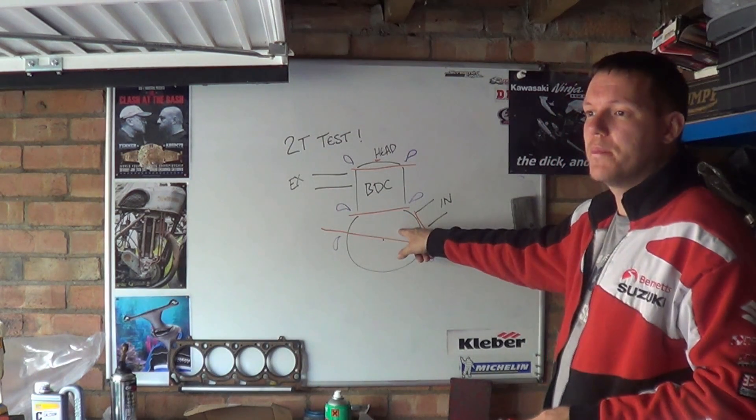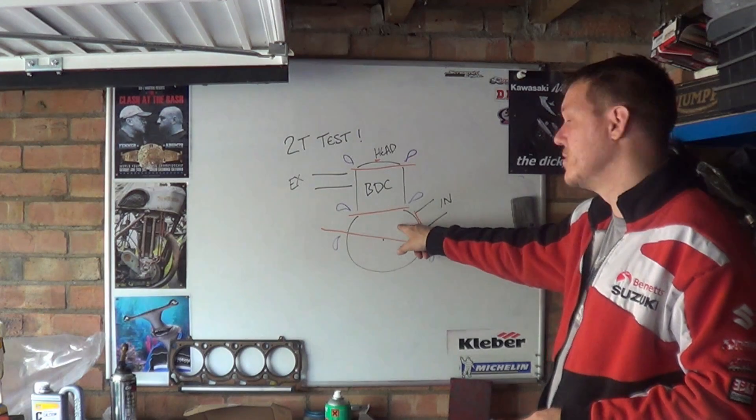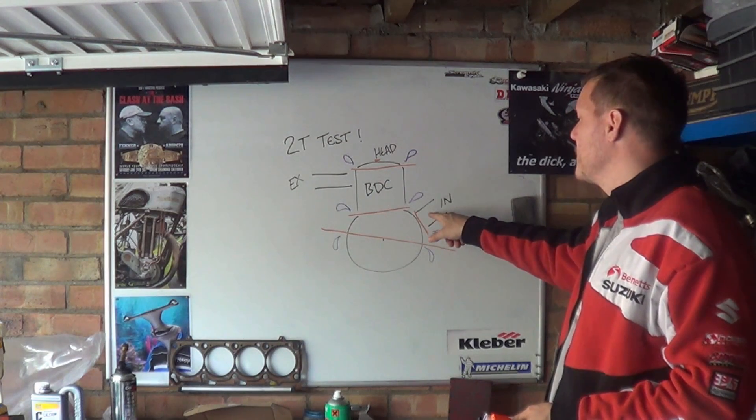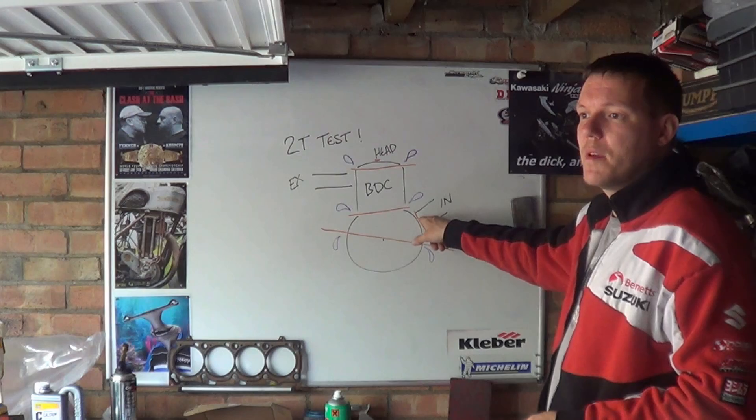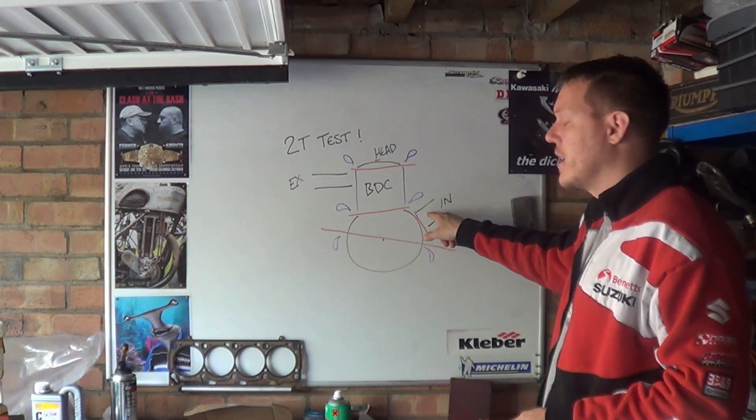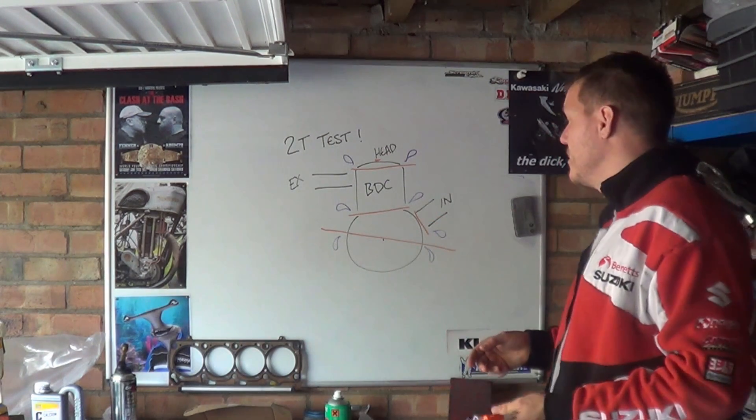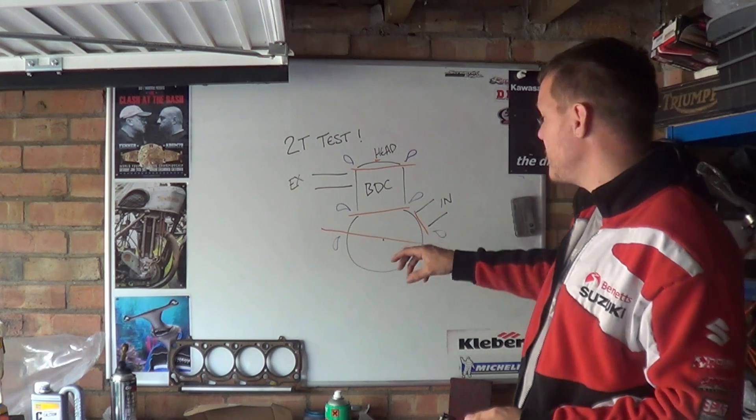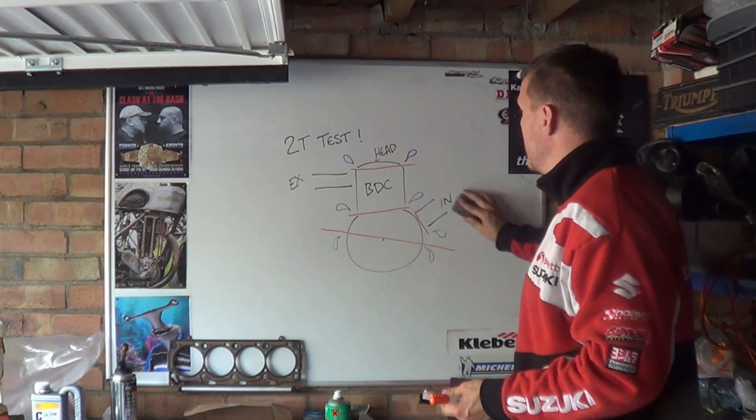But I usually put a pressure gauge at the actual inlet. And that's one thing you can do, you can have your reed block still on.